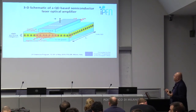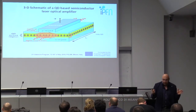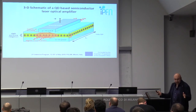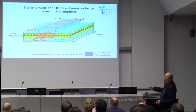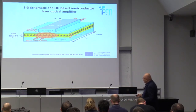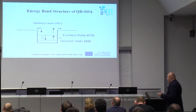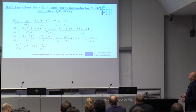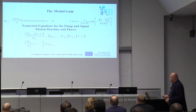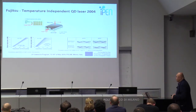A quantum dot semiconductor optical amplifier (SOA) is very similar to a quantum dot laser. The key difference is that there is no cavity — a low-power input signal is launched into the device and an amplified signal comes out. The rate equations for the quantum dot SOA are very similar to those for the quantum dot laser; the presentation is published so you can study the equations at your own pace.